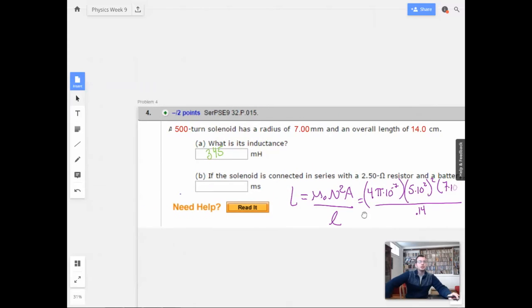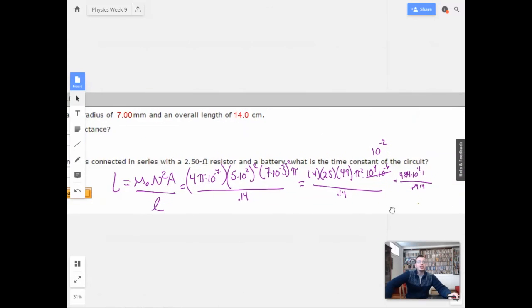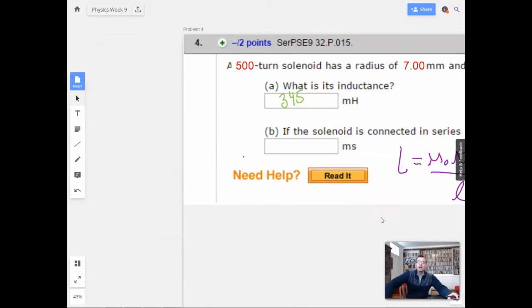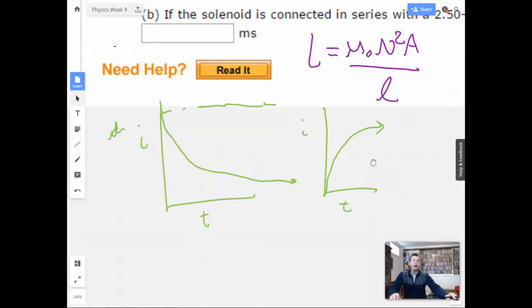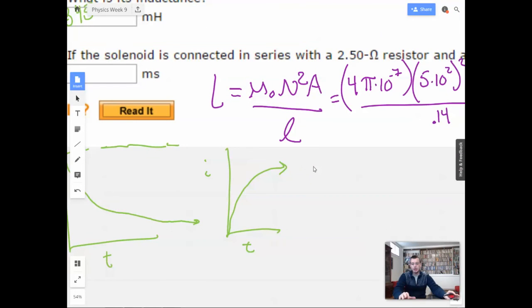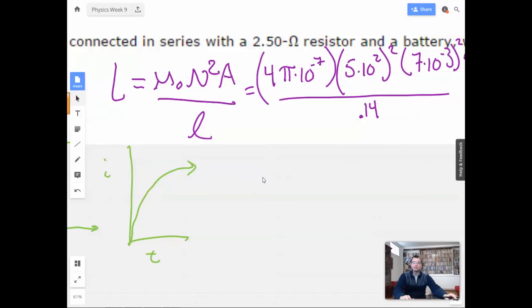If the solenoid is connected in series with a 2.5 ohm resistor and a battery, what is the time constant of the circuit? All right. So time constant. So when you have a solenoid discharging, then current is going to look like this. Like that over time. You have your initial current, and then it's going to slowly die off. Or if you have it charging, it's going to build up like this. This is your final current. And this time constant is basically going to have to do with how quickly it gets there.